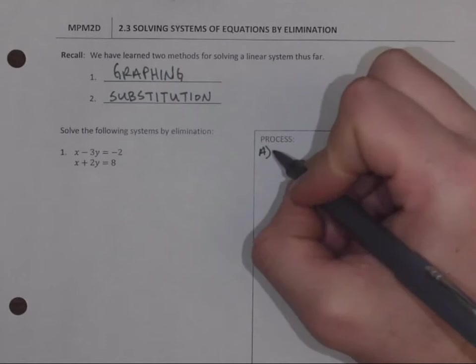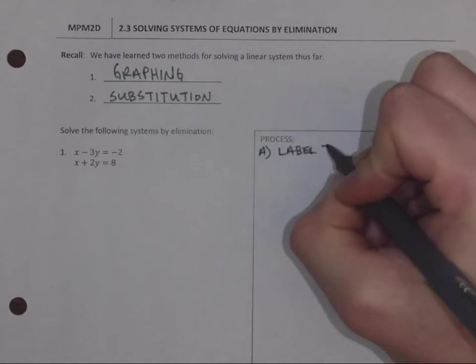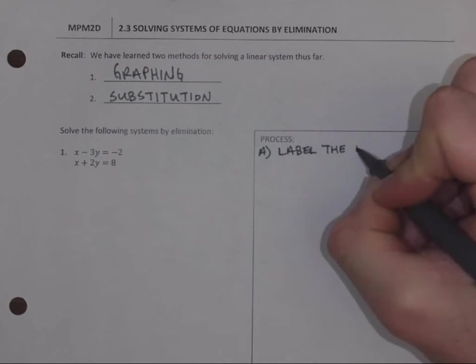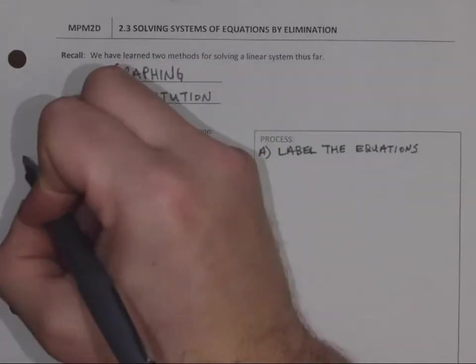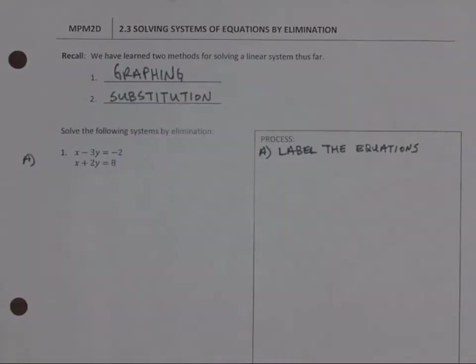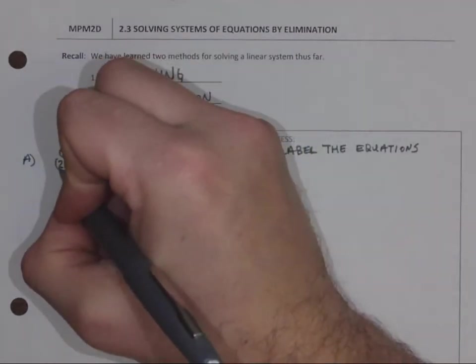First thing we're going to do, we're going to label the equations. So when I go to do that, I'm going to label, let's say the first one is equation 1, the second one equation 2.